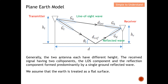In general, the transmit and receive antennas have different heights. The received signal has two components: the line-of-sight component and the reflected component. The reflected component is predominantly formed by a single ground-reflected wave, and this single ground-reflected wave typically dominates — this is what we call the plane earth model. We assume the earth is treated as a flat surface, though slight curvature or irregularity is acceptable.